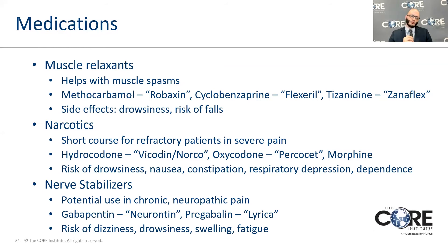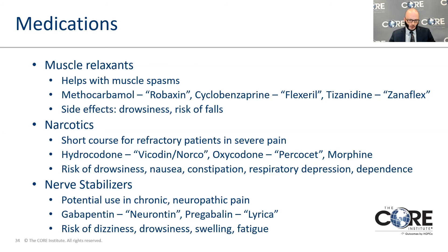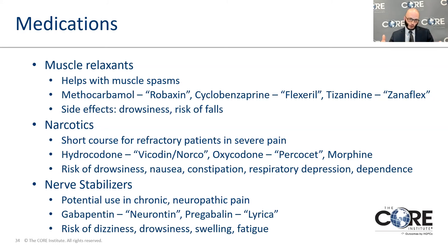Other medications we use are muscle relaxants — these help treat muscle spasms. The medication I like to use is methocarbamol or Robaxin, but other commonly used medications are cyclobenzaprine or Flexeril, and tizanidine or Zanaflex. These work through different pathways and everybody responds a little differently. Some muscle relaxants make people sleepy and drowsy, creating a risk for falling, so we try to avoid these in very elderly patients and those with balance issues.